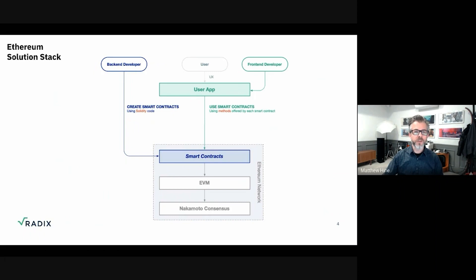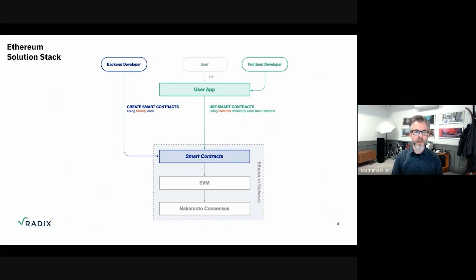The interface to a smart contract is what's called a method. It's pretty simple: a smart contract gets written, deployed to the ledger, and that smart contract runs on what's called the EVM, or the Ethereum Virtual Machine. This is almost like a hardware layer — it knows how to run Solidity code. And in the end, that's being committed to the Ethereum ledger through the Nakamoto-style consensus mechanism that Ethereum uses today.